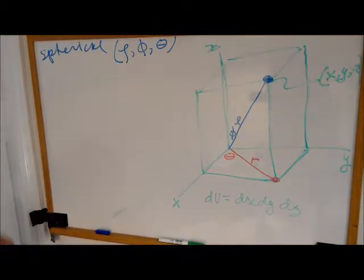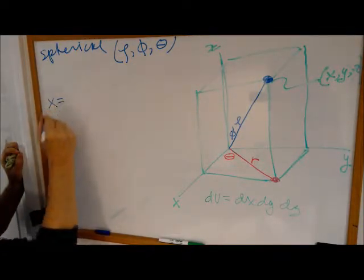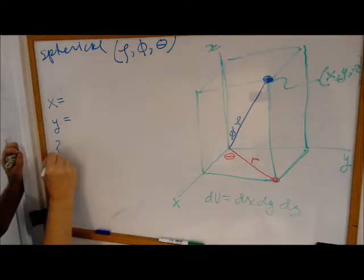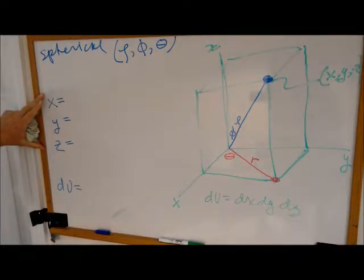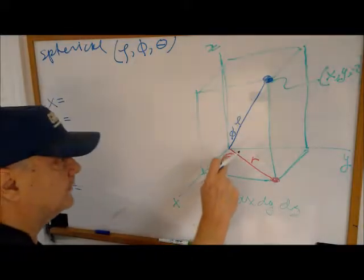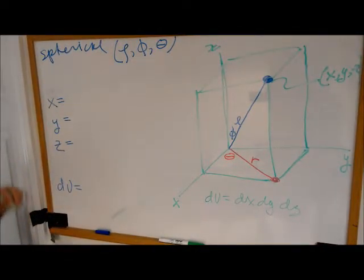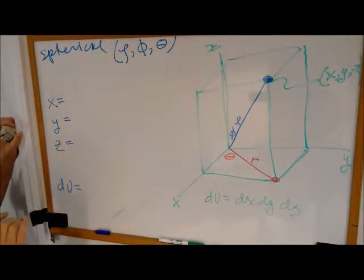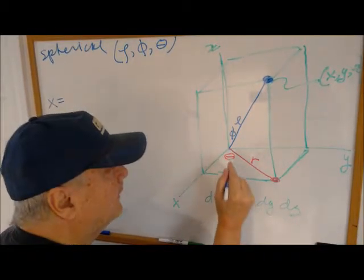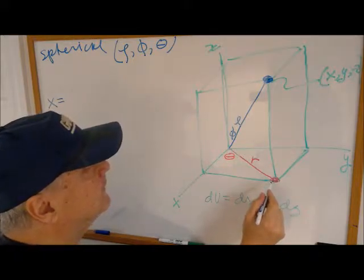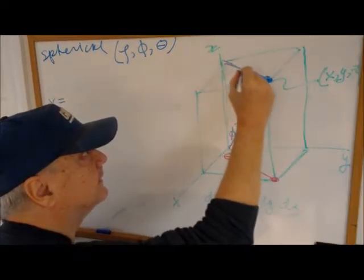The trick to remembering this is we want to write formulas for x, y, and z, and then also dv. The trick is to first write things in terms of r and θ. But before we can do that, we need to define what r is. This length, r, is the same thing as this length, r.